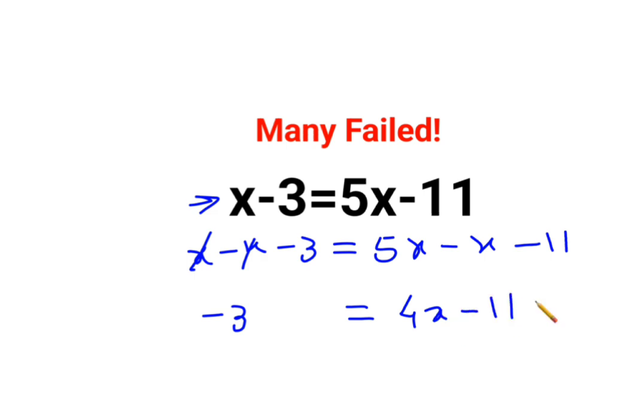Now your next job is to shift the numbers on the other side, so you add 11 on both sides. Here you are getting 8 equals to 4X. In order to find the value of X, you will divide both sides by 4. Therefore, the value of X equals to 2.